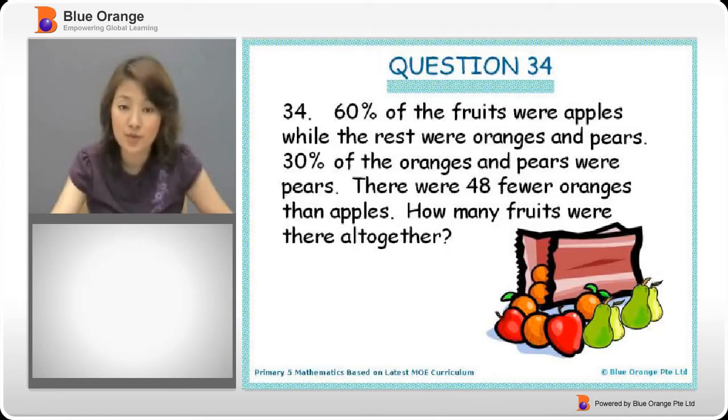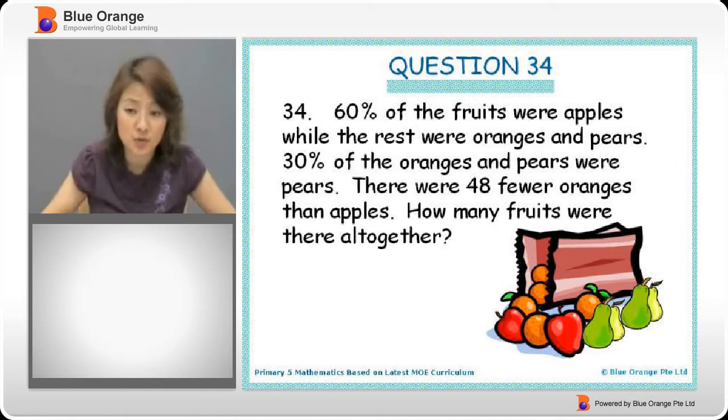Let's move on to question 34. 60% of the fruits were apples while the rest were oranges and pears. 30% of the oranges and pears were pears. There were 48 fewer oranges than apples. How many fruits were there altogether?